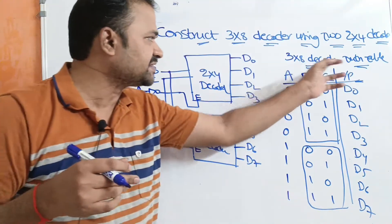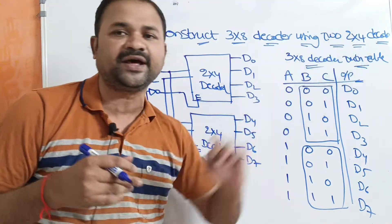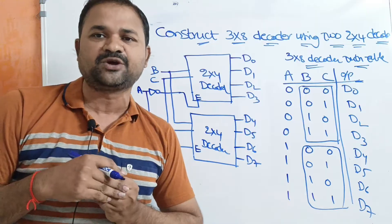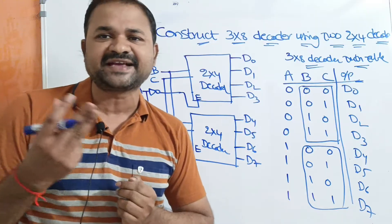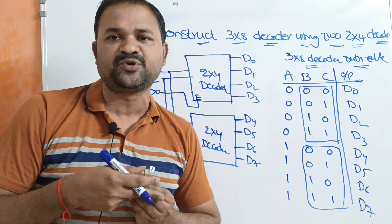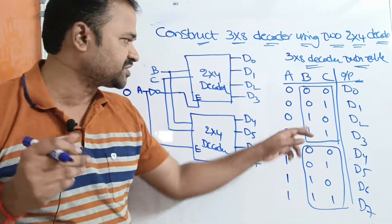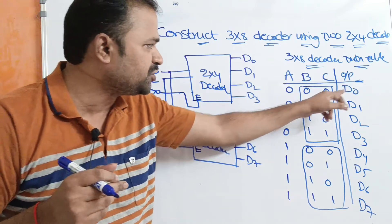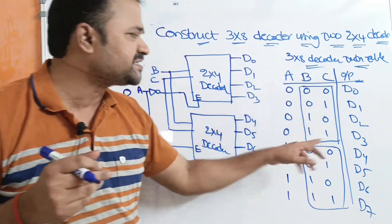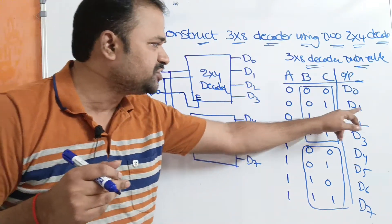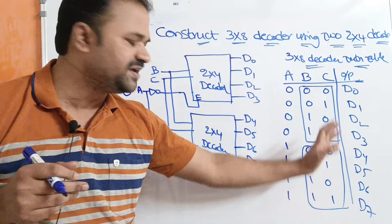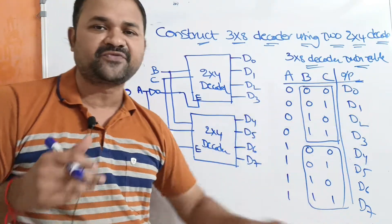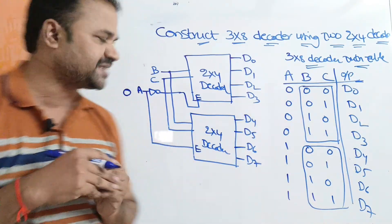Let us see the 3x8 decoder truth table. We know about the 3x8 decoder — it accepts three inputs and produces eight outputs. If the inputs are 0, 0, 0 the output is D0. If the inputs are 0, 0, 1 then D1, and likewise it produces eight outputs from D0 to D7.